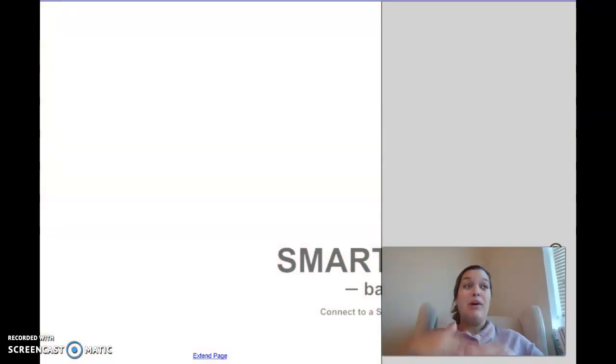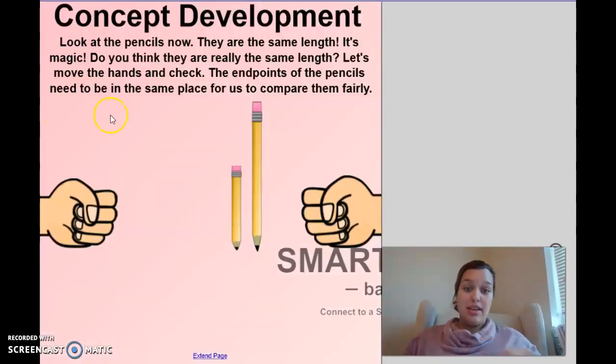So, today we talked about longer than and shorter than. And we talked about accuracy. And remember, accuracy means we want the closest answer. And we want it to be the closest to the correct answer. So, we can't just go change things. We couldn't put this pencil up here and say they're the same length.